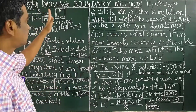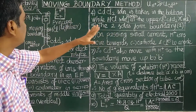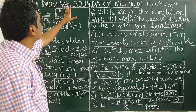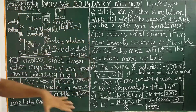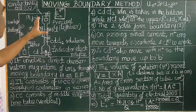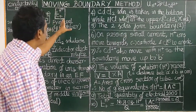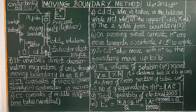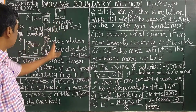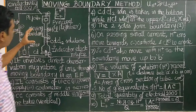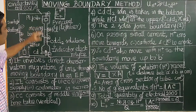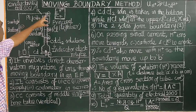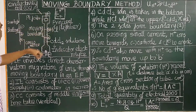This is the Moving Boundary Method. By using this method, the transport number of hydrogen ion is determined. This method involves direct observation of migration of ions under electrolysis control.